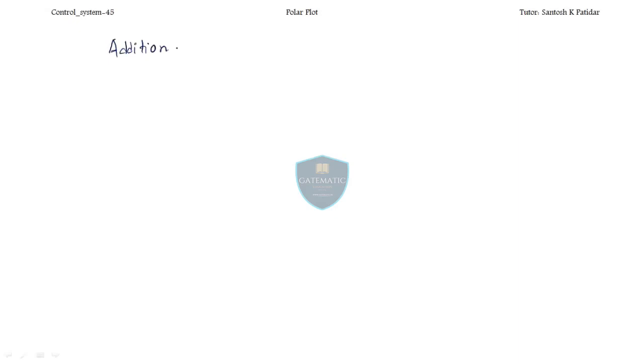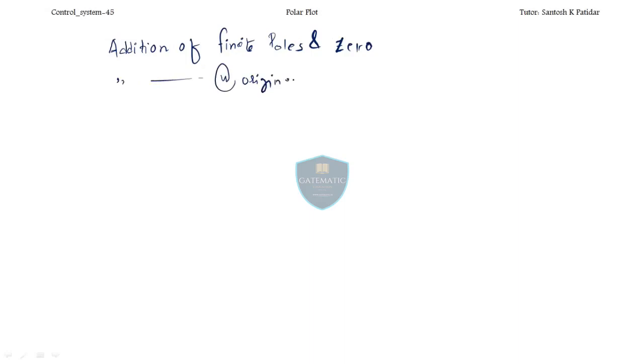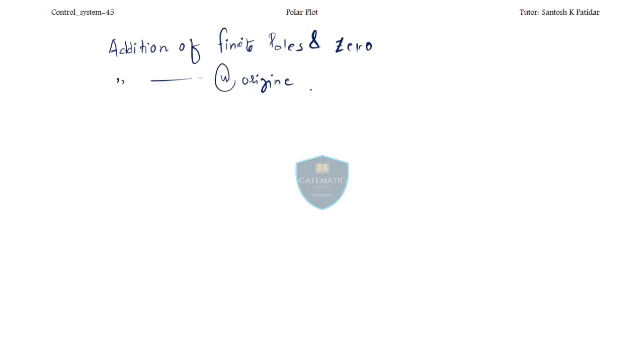Hi friends, welcome back. Today we will continue. So up to here, what we have seen is the addition of finite poles and zeros, and also the addition of poles and zeros at certain positions. In today's lecture, what we will see is we will add some zeros and poles which have positive real parts — meaning we are now going to add zeros in the RHS.